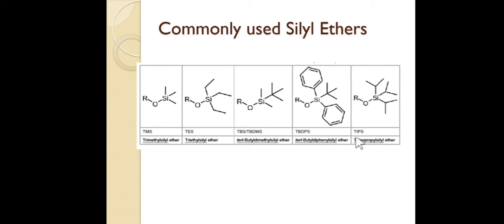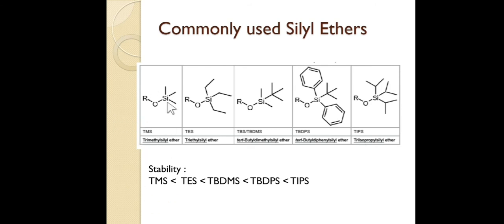Why were so many silyl ethers developed? Because as you increase the bulk on silicon, the stability increases. TMS is the least stable and is easily deprotected, while as steric crowding increases, stability increases. For example, if you have both a TMS group and a TBDPS group, the TMS will be cleaved first. The highest stability is TIPS and the lowest is TMS under all deprotection conditions.